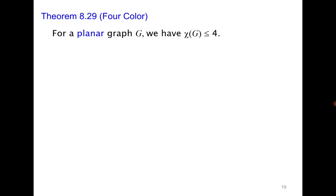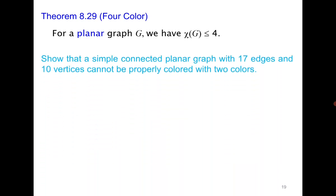A more powerful result states that for a planar graph the chromatic number is at most four — the four color theorem. The proof is very tedious so we will not go into its details, but it is important to remember this result. The next question says: consider a simple connected planar graph with 17 edges and 10 vertices, and show that it cannot be colored with two colors.